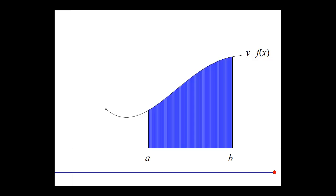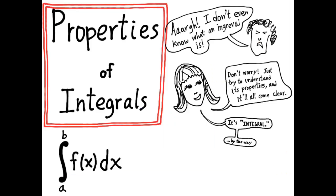We can naively think of the integral as being the area under the curve, but we know that it's really a Riemann sum, and that the terms in the Riemann sum can be negative or positive. We'll discuss this a little more in a minute. We're going to use the integral from a to b of f of x dx to stand for any integral.